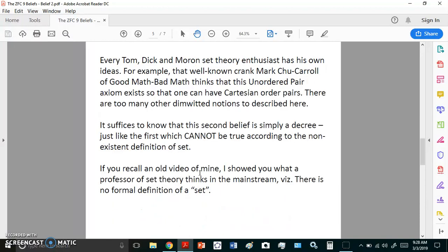This is why you're required to believe in this axiom. Every Tom, Dick, and Moron has his own ideas. It doesn't matter how many websites you visit, how many professors, articles, or lectures you read. They're all non-standard. In other words, they do not have standard symbolism. They do not have standard ideas. They've just basically interpreted these nine beliefs as they please. And what's wrong with that? After all, they're beliefs, right? That's really too funny. For example, that well-known crank, Mark Chu-Carroll of Good Math, Bad Math, actually his blog is really Bad Math, Bad Math, but he thinks that the unordered pair exists so that one can have Cartesian-ordered pairs. Well, I hear Star Trek music playing when I read his blog. It's unbelievable crap.